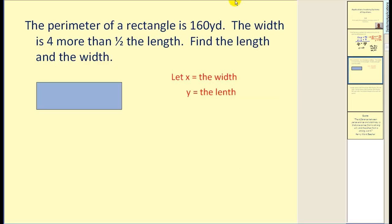Let's take a look at another. The perimeter of a rectangle is 160 yards. The width is 4 more than half the length. Find the length and the width. So let's let x equal the width and y equal the length. Let's label our rectangle. I'm going to label this y for the length and this x as the width.